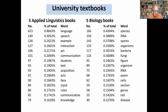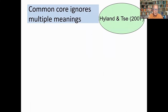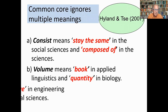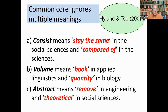Less obvious than content words are the semi-technical items that often differ by discipline. Analyzing a corpus of over four million academic words, Polite and I found that high-frequency so-called universal items on Coxhead's Academic Word List have very different frequencies and preferred meanings in different fields. For example, 'consist' means 'stay the same' in the social sciences but 'composed of' in the sciences. 'Volume' means 'book' in applied linguistics and 'quantity' in biology. 'Abstract' means 'remove' in engineering and 'theoretical' in the social sciences — words which look the same have different meanings across fields.